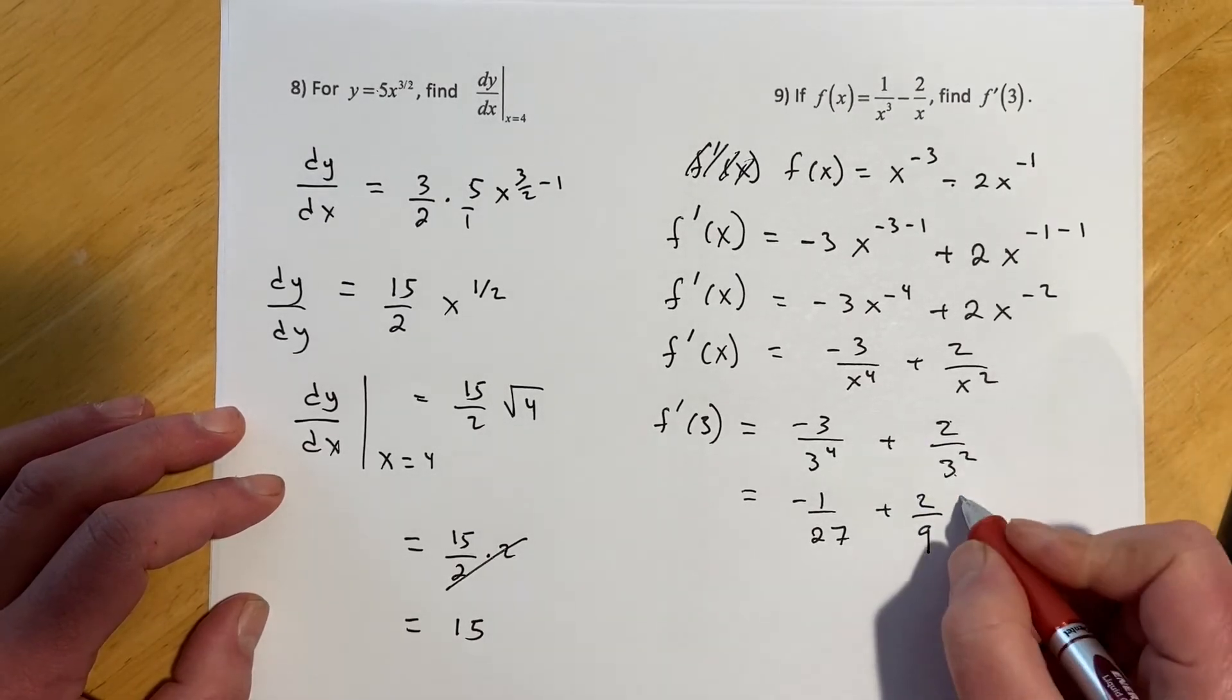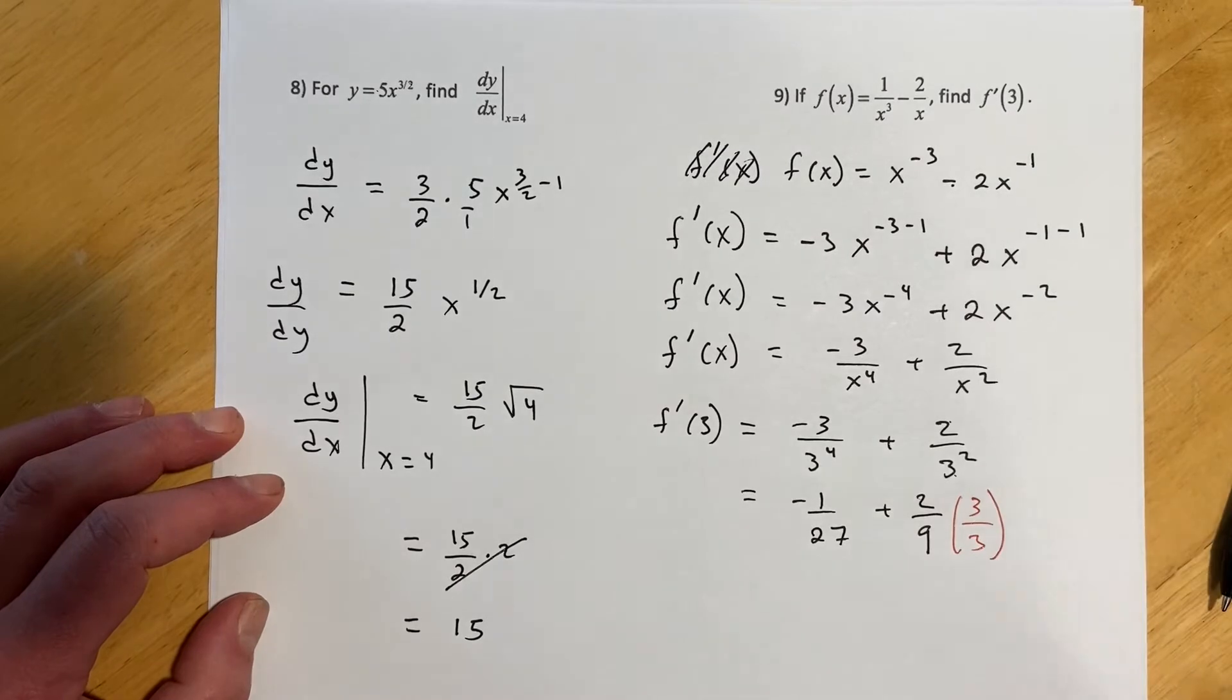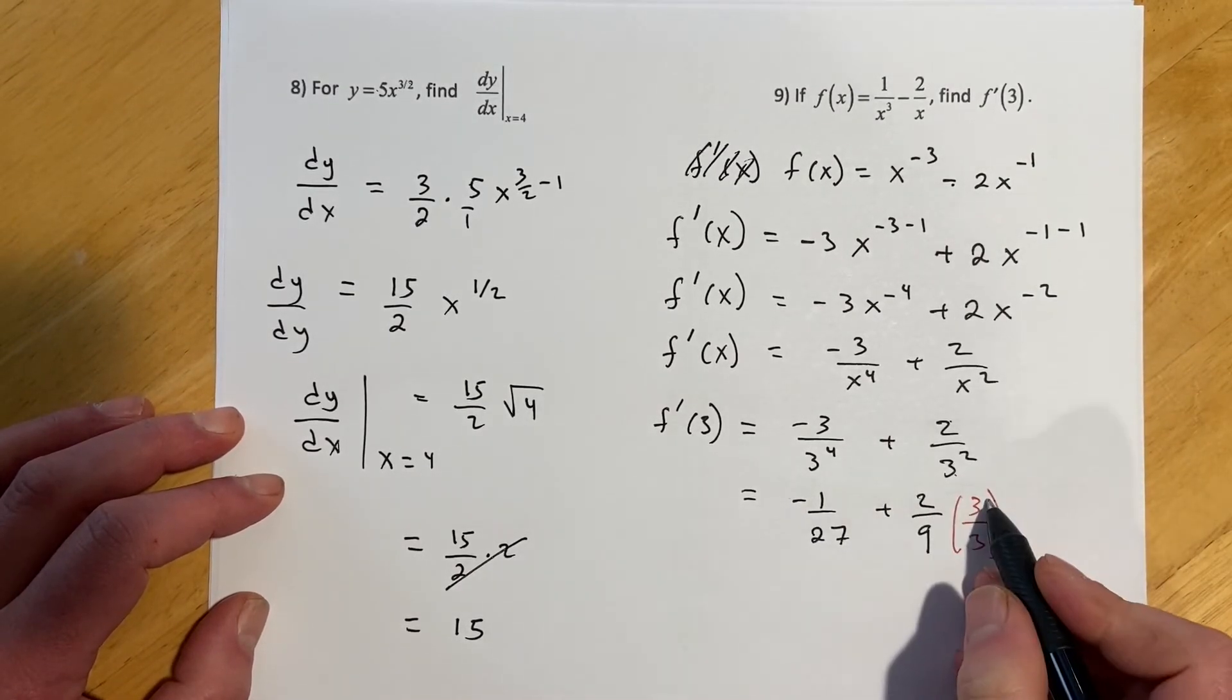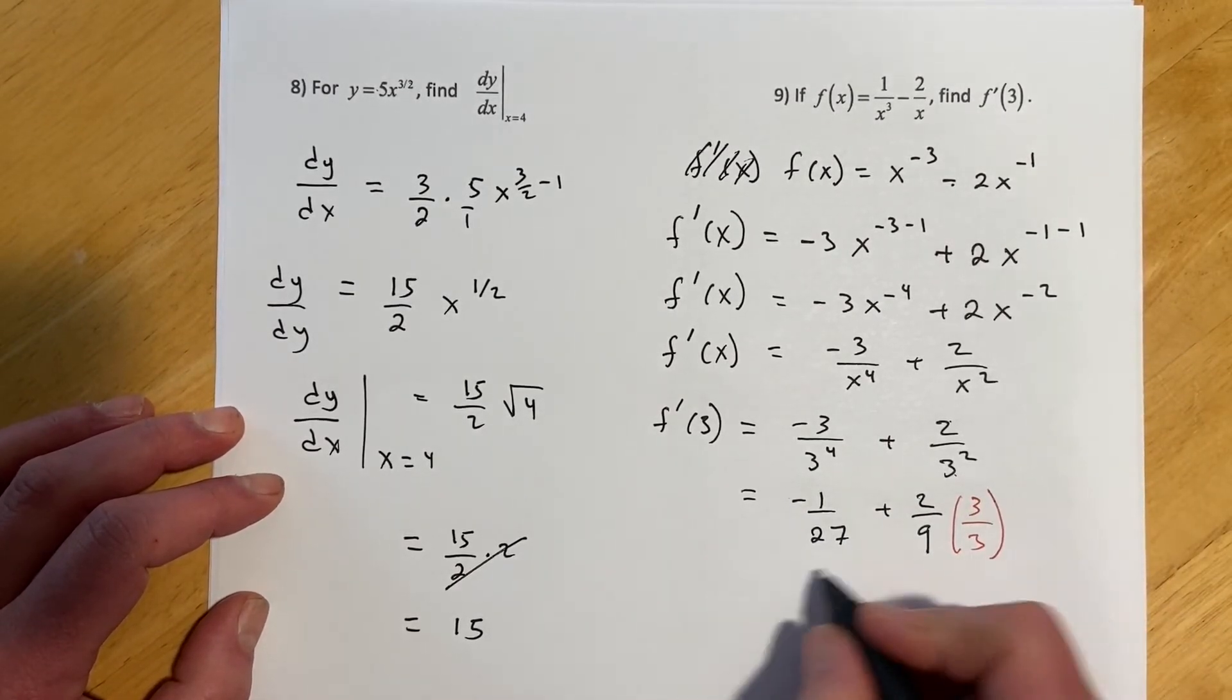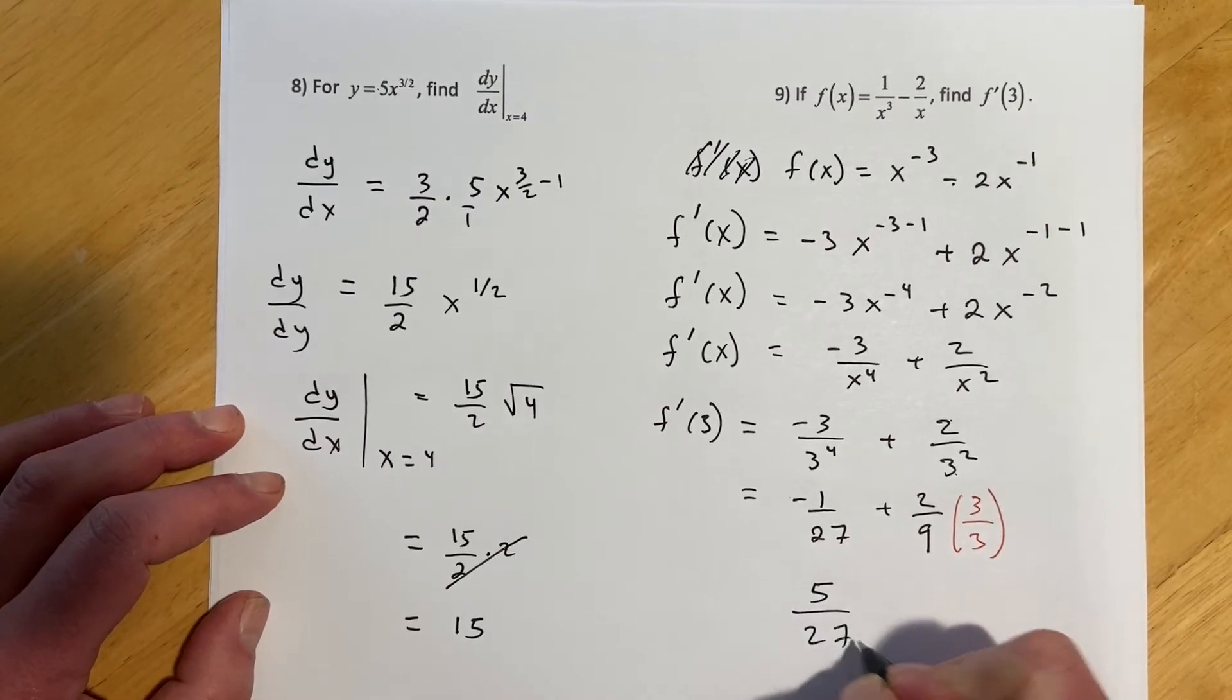And then if I get a common denominator, 3 over 3, that would be negative 1 plus, it looks like 6, so that would be 5 over 27.